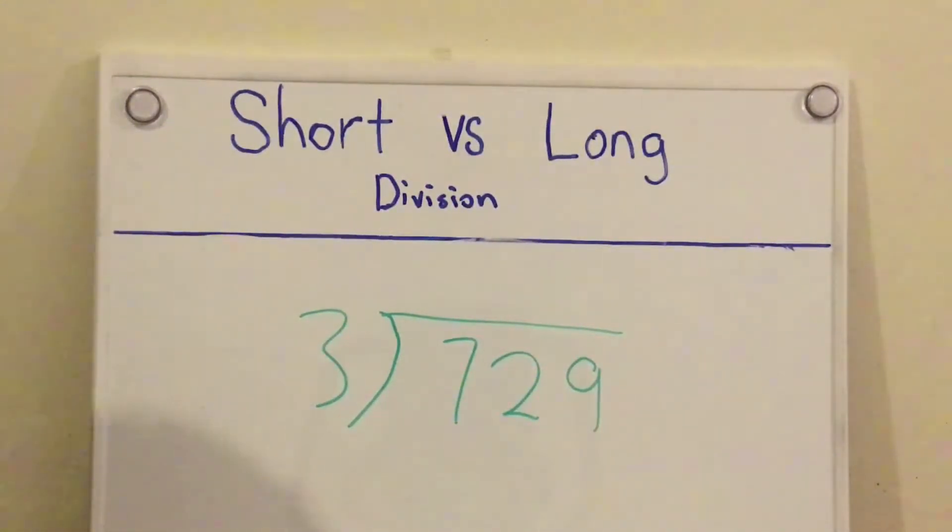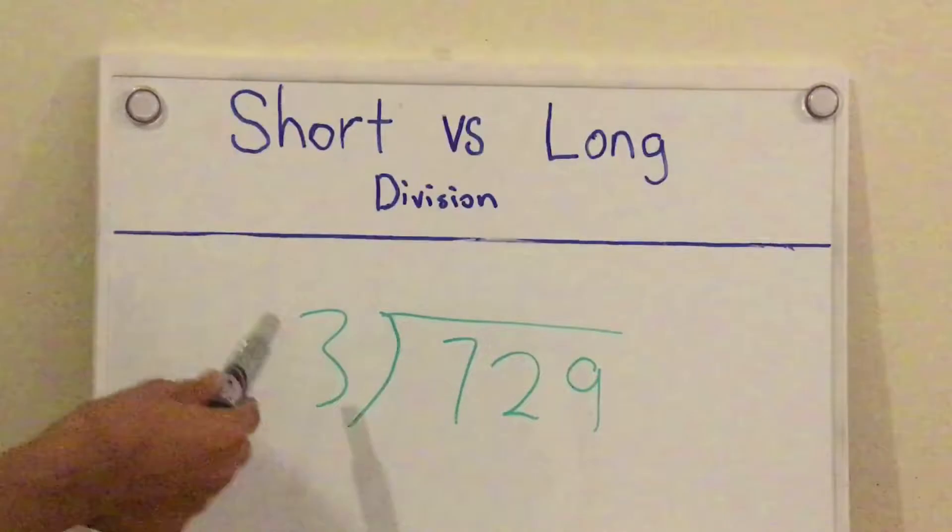Okay, so our first question is going to be 729 divided by 3. So the first thing you need to do is take the first digit and divide by the divisor. If you can't do that, you take the next digit and divide it by the divisor.